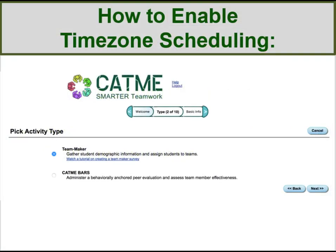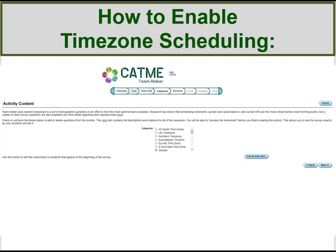First, create a TeamMaker survey. Once you reach the activity content screen, select the questions you want to include in your TeamMaker survey. Once you have chosen your questions, select the Next button and continue creating the survey normally.